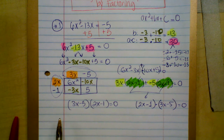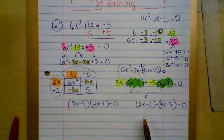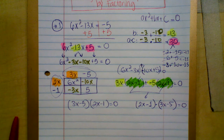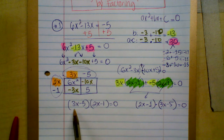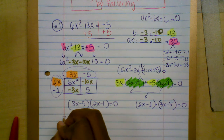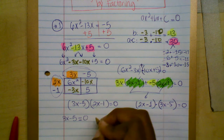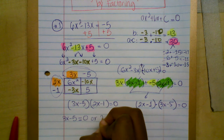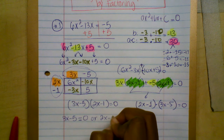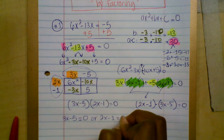Pull out the common factor (2x minus 1) outside. The leftover terms are positive 3x and negative 5, giving (3x minus 5). So the factored form is (2x minus 1)(3x minus 5) equals zero — same result as the box method. Now step three: apply the zero product property. Take each factor and set it equal to zero.